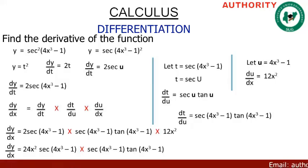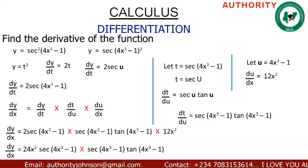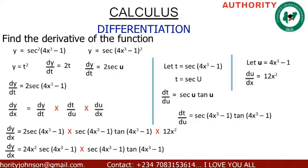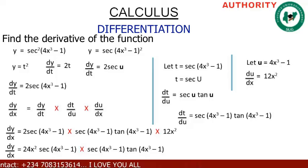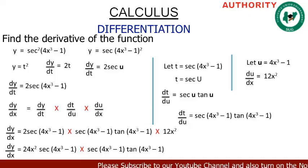Substituting all parts: dy/dx = 2·sec(4x³ - 1) times sec(4x³ - 1)·tan(4x³ - 1) times 12x². Multiplying 2 by 12x² gives 24x². So dy/dx = 24x²·sec(4x³ - 1)·sec(4x³ - 1)·tan(4x³ - 1).